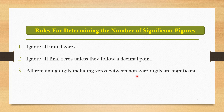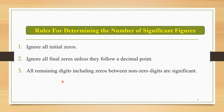The third important rule for determining significant figures is: all remaining digits, including zeros between non-zero digits, are significant. All digits that are between non-zero digits, including zero, are to be considered as significant figures. These are the three important rules for determining the number of significant figures.